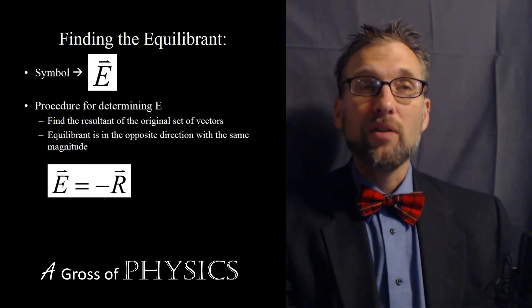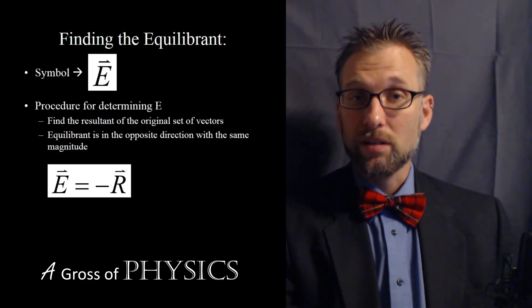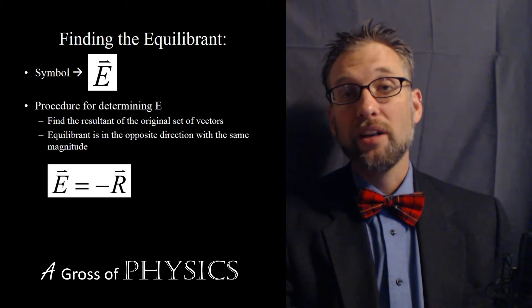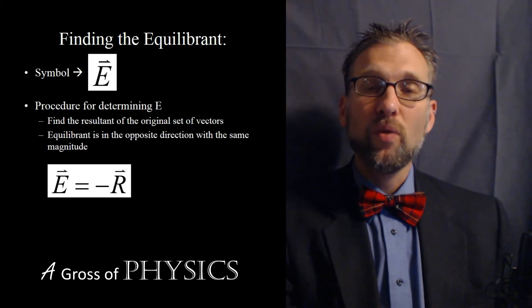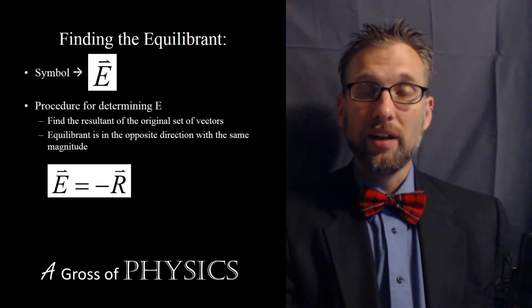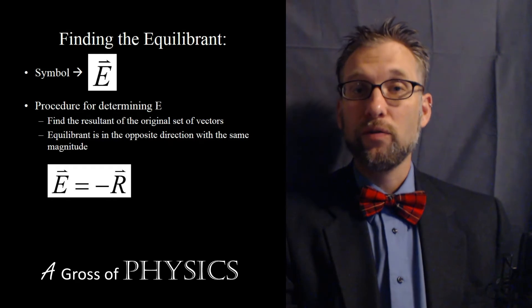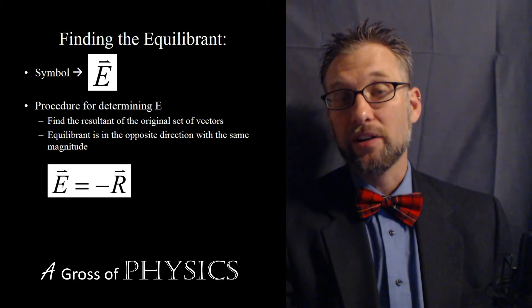So it's easy to calculate with the north, south, east, and west coordinate system. All you have to do is take your direction and flip it. So what we have is a situation where if it's west, we make it east for the equilibrium. If it's north, we make it south for the equilibrium. So whatever the resultant is, we switch the name of the vector.